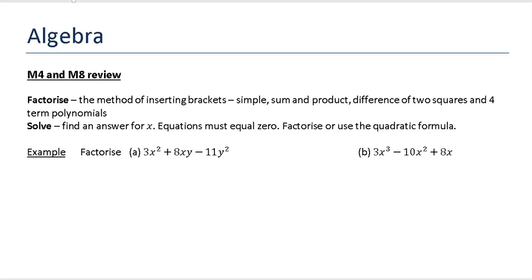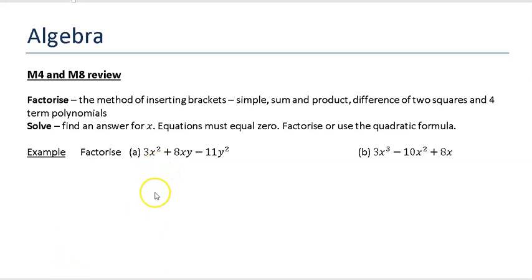We're going to be looking at algebra, and a lot of this stuff we have covered already in our M4 and M8. So the first thing we're going to look at is factorizing using the sum of product method. The first question says factorize 3x squared plus 8xy minus 11y squared. Now this is actually one of the more difficult ones, so I'm just going to jump and have a look at a slightly easier example of this type.